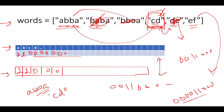Our answer so far has 'aabb' and 'cd'. We reset the base string to 'ef' for further iterations. Once the words array is exhausted, we add the last base string 'ef' to the answer as well. So the final answer contains 'aabb', 'cd', and 'ef'.